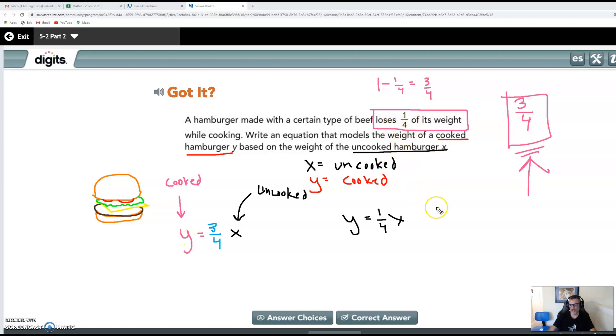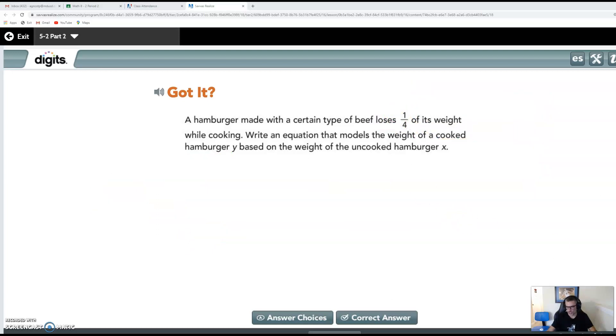So be careful with these fraction ones. If it says it loses an eighth or it loses a fifth, well that means you have seven eighths left or four fifths left. So our situation here, our equation would be y equals three fourths x. The uncooked burger is always three fourths of the original cooked burger's weight because we lose the one quarter. Let's go over one last problem.